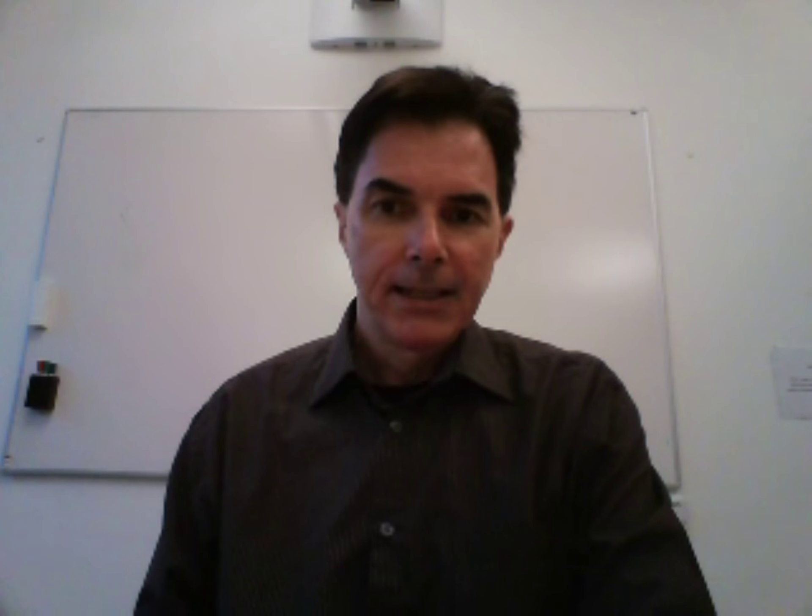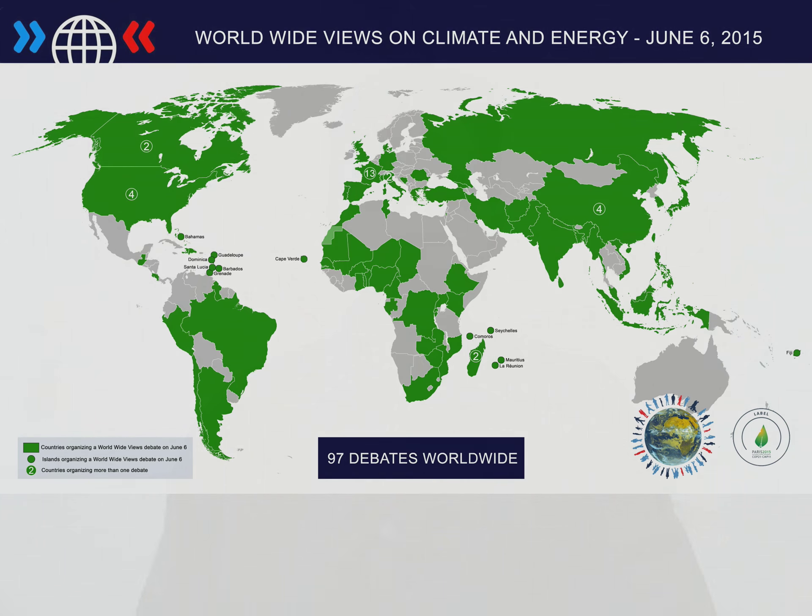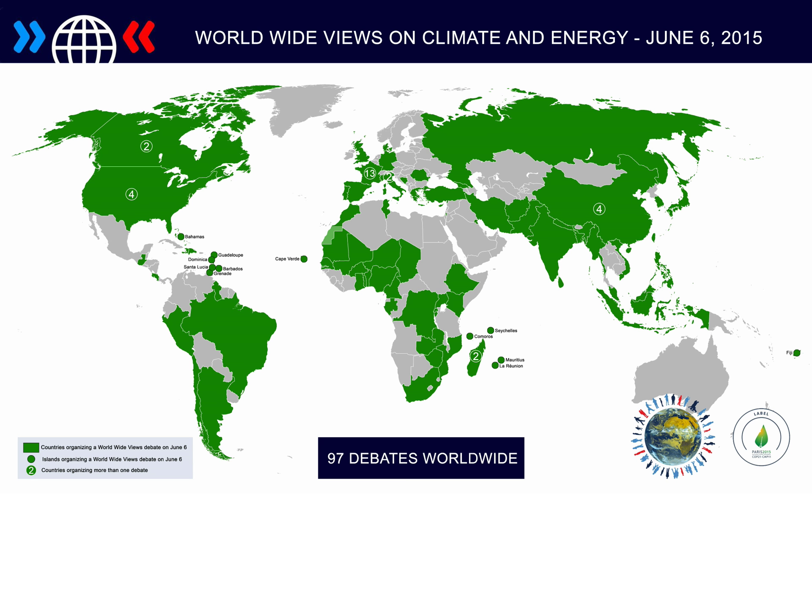Deliberative democracy processes can even be global. An example is in relation to climate change, where a network of deliberative democratic facilitating organizations coordinated their efforts in what they call Worldwide Views. 44 meetings in 38 countries were held at the same time, each of them with 100 people representing a variety of the population. The applied methods were the same, and after the deliberation process the participants voted on answers to key questions, and the results were collected in a joint recommendation to the global COP15 meeting in 2009.